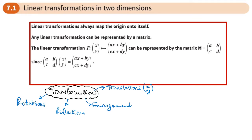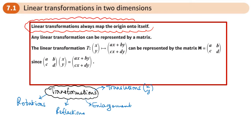In further maths, what we're going to be doing is representing some of these transformations as matrices. We're going to be looking at things called linear transformations. What's special about a linear transformation is a couple of things. The first is that the origin maps to itself — in other words, the origin doesn't move.